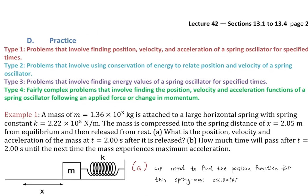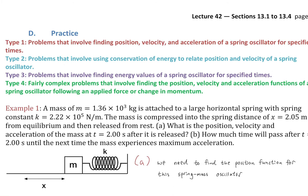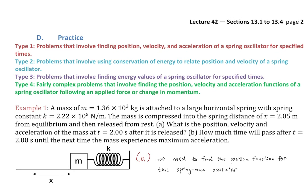Let's get to practice. We have four types of problems. Type 1: finding position, velocity, and acceleration of a spring oscillator for specified times. Type 2: using conservation of energy to relate position and velocity. Type 3: finding energy values at specified times. Type 4: more complex problems involving position, velocity, and acceleration functions combined with an applied force, change in momentum, or collision — like a collision that leads to oscillation, requiring setup before applying SHM equations.